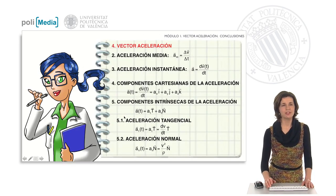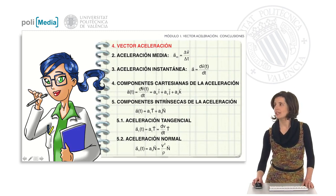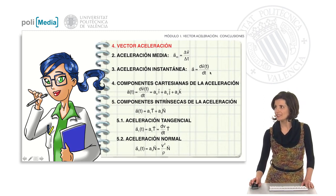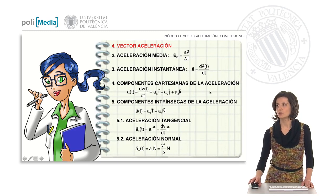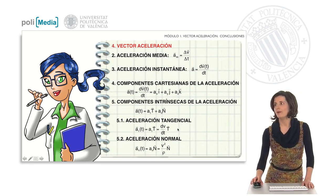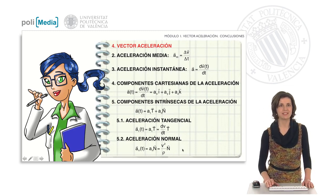It is time for Amanda to remind us of the most important things seen in class today. The average acceleration is the increment of velocity divided by the increment of elapsed time. The instantaneous acceleration is the derivative of the velocity vector with respect to time. We calculated its Cartesian components and its intrinsic components. Tangential acceleration is the derivative of the velocity modulus with respect to time times the tangent vector, and normal acceleration is the velocity modulus squared divided by the radius of curvature times n. See you soon.